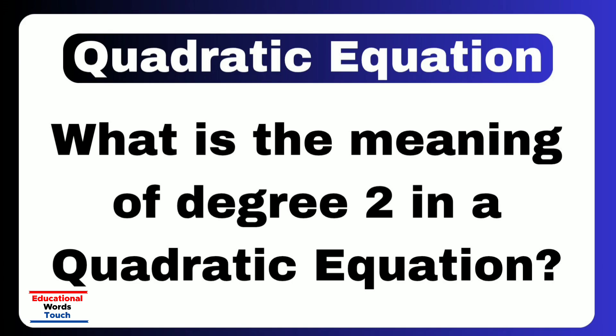This means that when the equation is graphed, it forms a parabola, which is a U-shaped curve. The degree determines many important features of the equation, such as the number of possible solutions, which are at most 2, and the general shape of its graph.